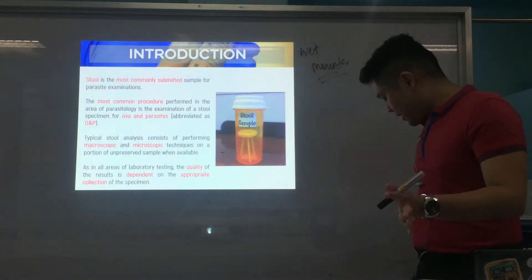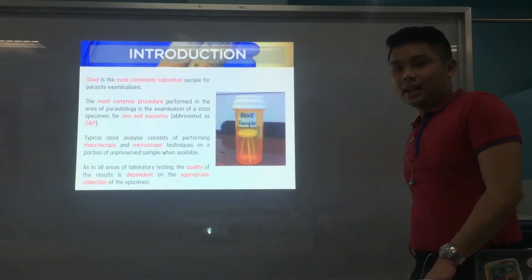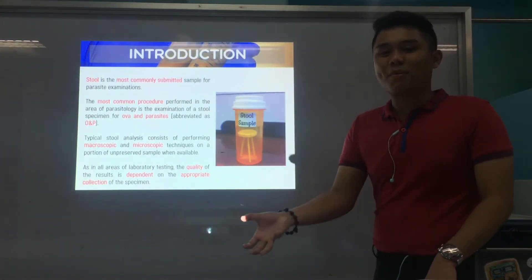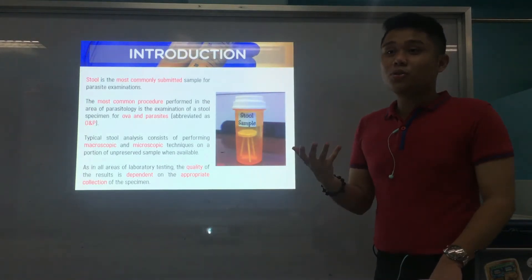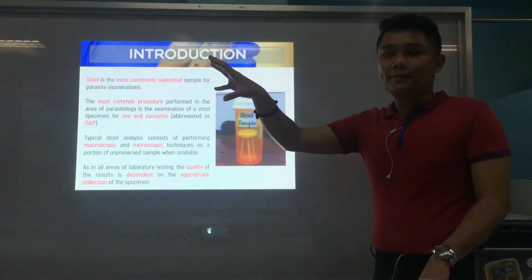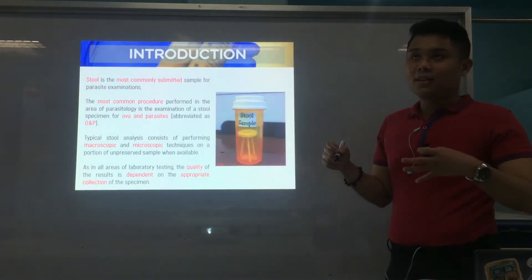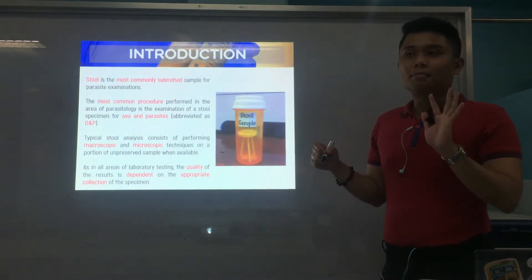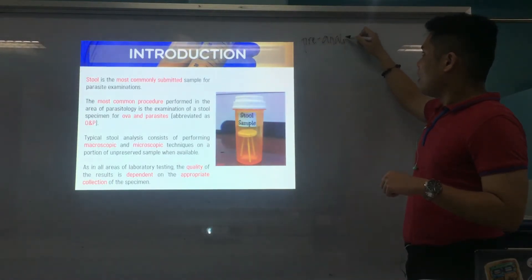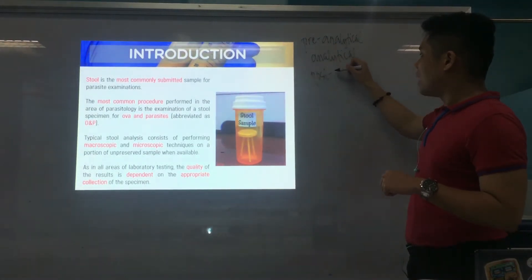As in all areas of the laboratory, the quality of the results depends on the specimen that is submitted. If your specimen is already deteriorated or bad, then you are to expect that the results are going to be inaccurate. Generally in the laboratory, there are three major phases or stages: number one, the pre-analytical; the second is analytical; and lastly, post-analytical.